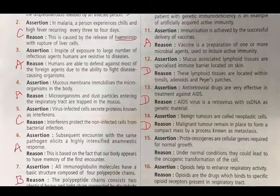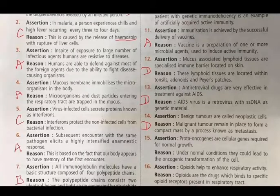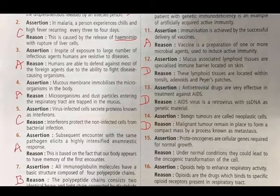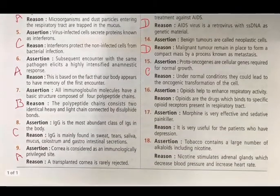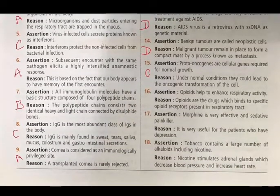Question 15 - Assertion: Proto-oncogenes are cellular genes required for normal growth. Reason: Under normal conditions they could lead to oncogenic transformation of the cell. The assertion is correct, but the reason is false — proto-oncogenes only become oncogenes and contribute to malignant transformation when mutated or overexpressed, not under normal conditions. Answer: C.